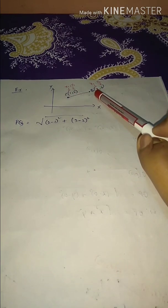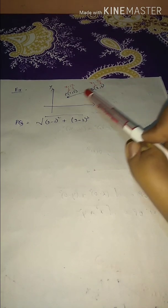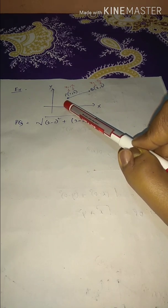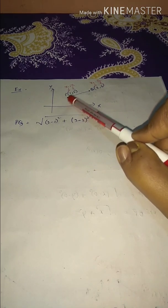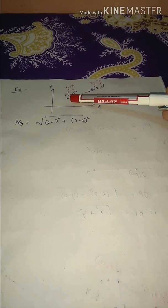Let's see an example. Consider two points: P(1, 2) and Q(2, 3). To find the distance PQ, let P be (X₁, Y₁) = (1, 2) and Q be (X₂, Y₂) = (2, 3). Applying the distance formula: PQ = √[(2 − 1)² + (3 − 2)²] = √[1² + 1²] = √2. So the distance is √2 units.